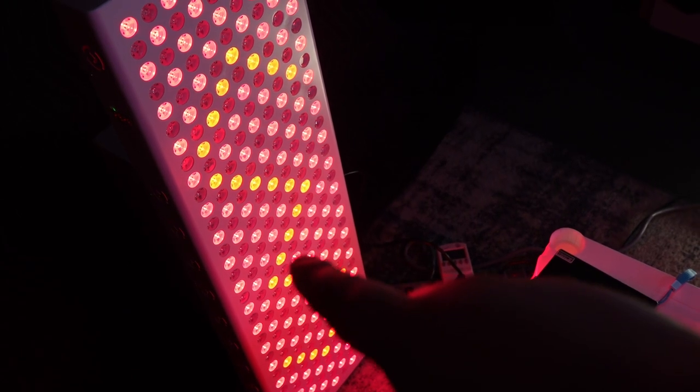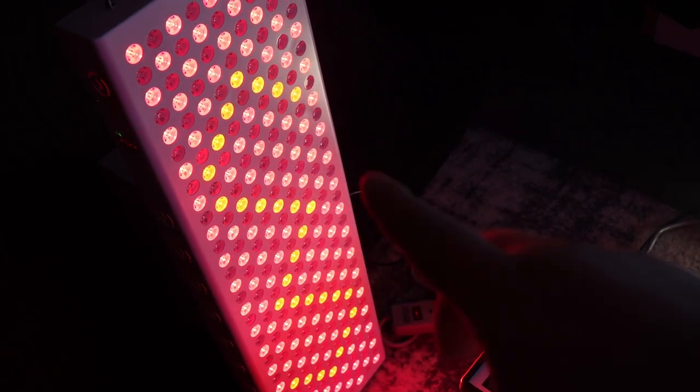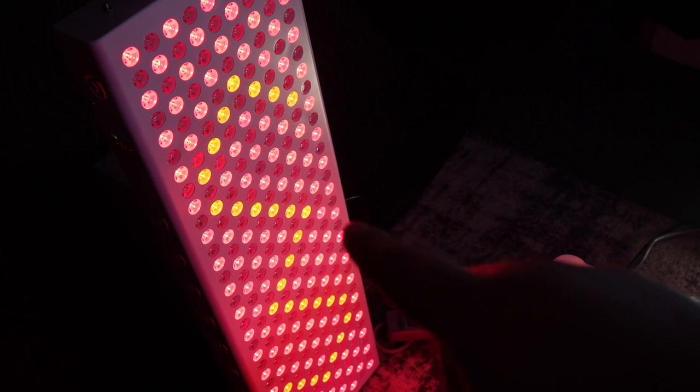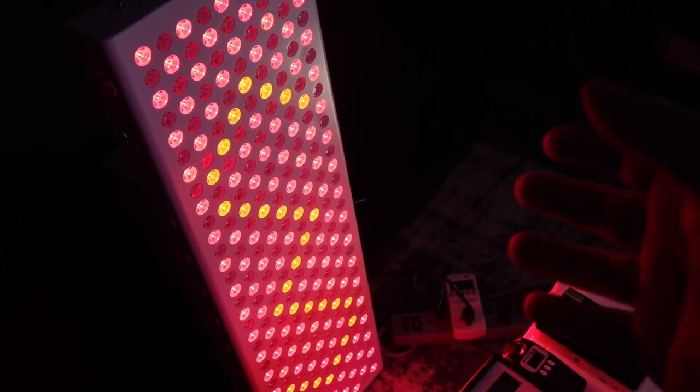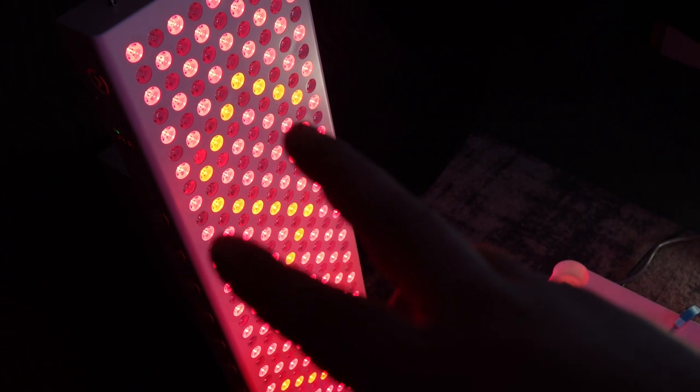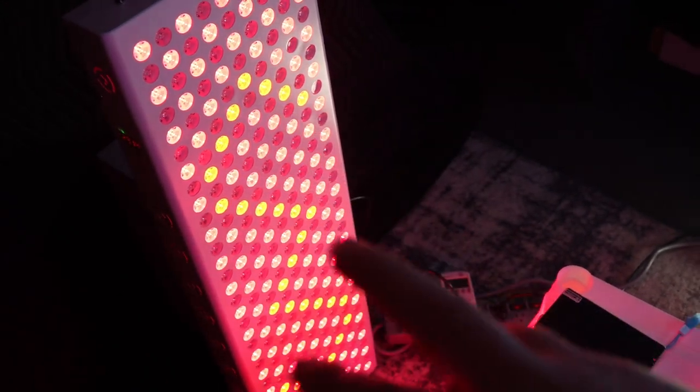it's a smaller percentage, it's not equally split with the 660, there's still more 660. The similar pattern's probably with the 850, and then there's two other lesser near infrared bulbs as well.